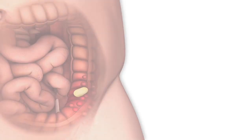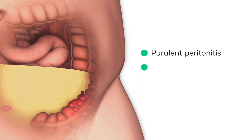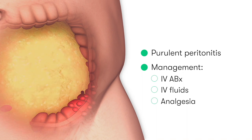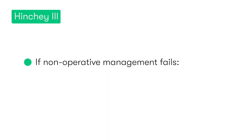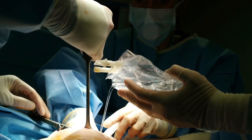In Hinchy 3, rather than having a contained collection of pus, the patient actually has free pus floating around the abdomen. We give IV antibiotics, IV fluids, and analgesia. If the patient remains relatively well and responds to these measures, this may be all they need. However, if they're unwell, demonstrating signs of sepsis, or failing to respond, we'll need to take them to theatre to wash out the abdominal cavity and achieve control of the surgical source of sepsis.